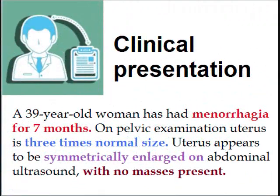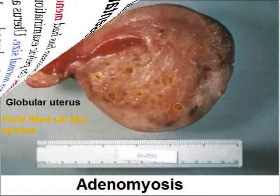Clinical presentation: a 39-year-old woman has had menorrhagia for 7 months. On pelvic examination, the uterus is 3 times normal size. The uterus appears to be symmetrically enlarged on abdominal ultrasound with no masses present.